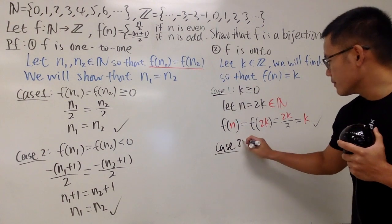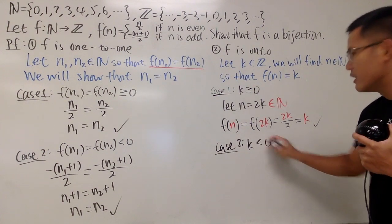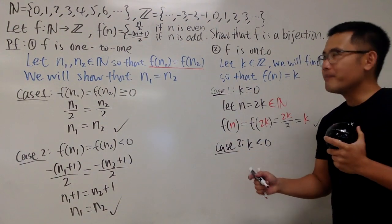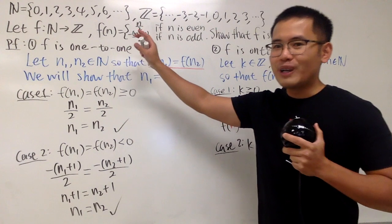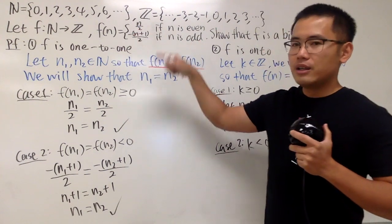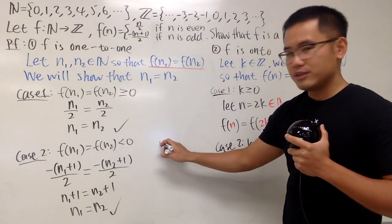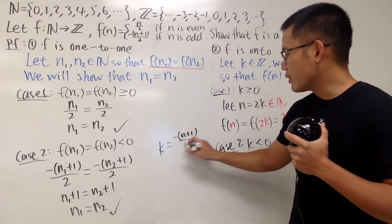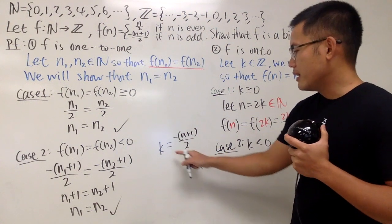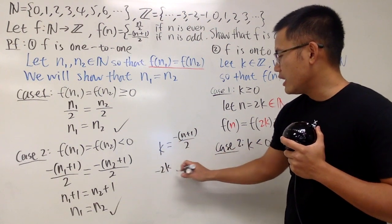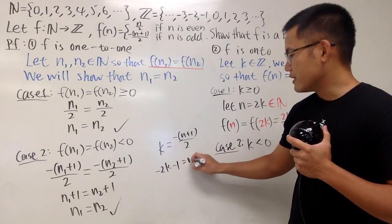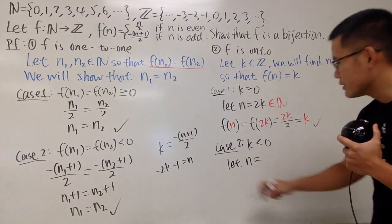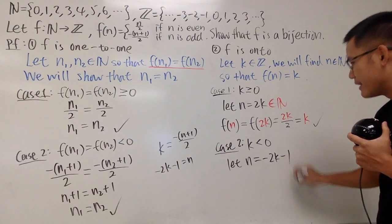Now, case 2. Well, k being negative. So it's very similar to this situation. Well, k being negative, you hope to find the n from here. So you just kind of do the scratch work again. So just put it on the side. Just say k equals this, which is negative n plus 1 over 2, and then do the little algebra. Multiply by negative 2 on both sides, which is negative 2k, and then subtract 1, and that will give us n. Just do the algebra. So I would just say that n equals that, namely negative 2k minus 1.